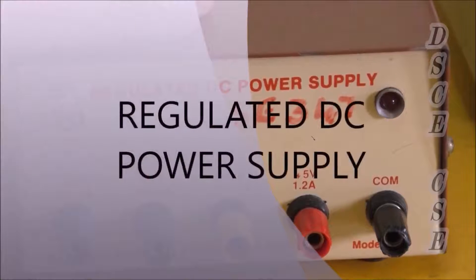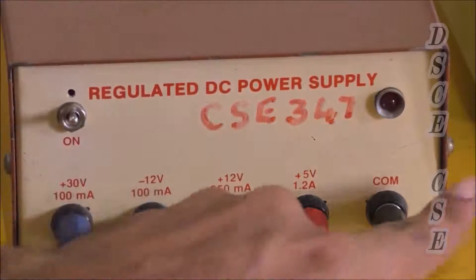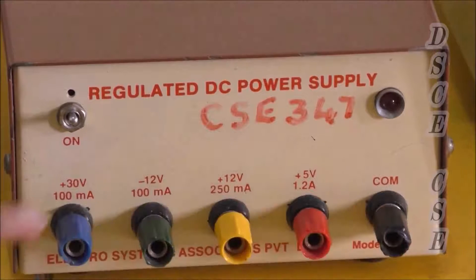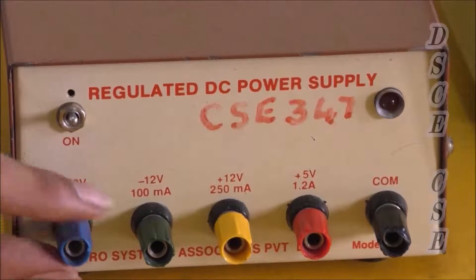This is a regulated DC power supply which can give 5 volts and 12 volts as the voltage output. This is the common ground knob and this is for 30 volts voltage.